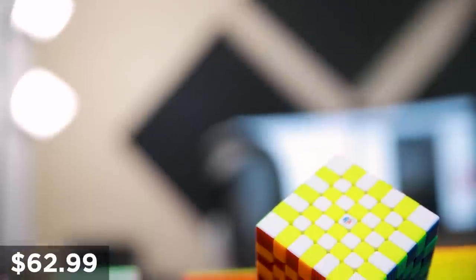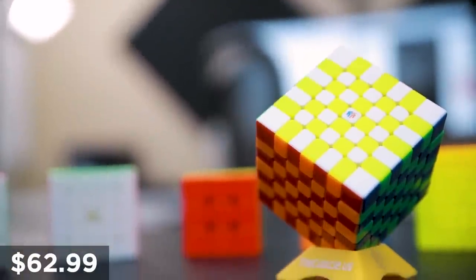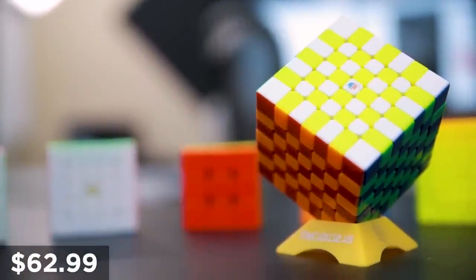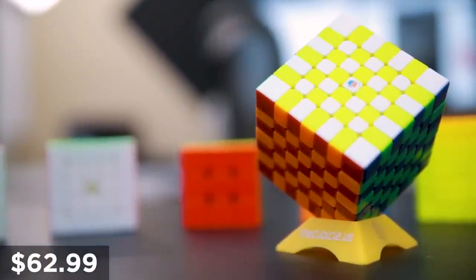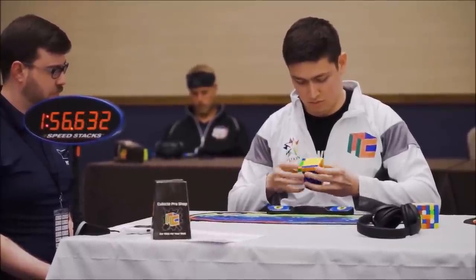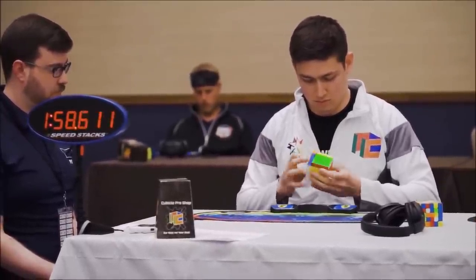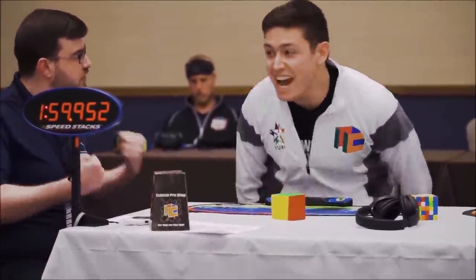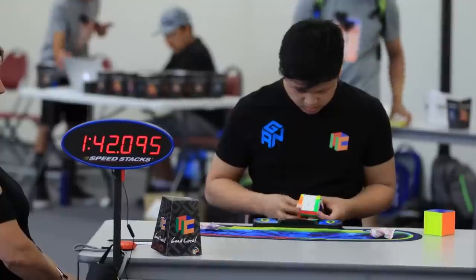The Hays 7M was a tremendous disruption in the 7x7 market this year. Even prior to its official release, the cube was used to break 7 world records. Before the Hays 7, the world record single was 2:06 and it is now 1:47, which is nearly a 20 second drop.